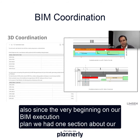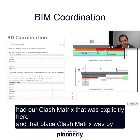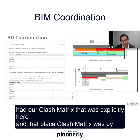Also, since the very beginning on our BIM execution plan, we had one section about our coordination goals. On those coordination goals, we were discussing visual issues detection, and we also had our clash matrix that was explicitly here. That clash matrix was by discipline.